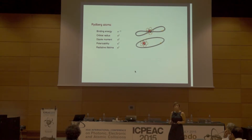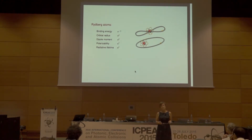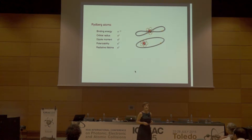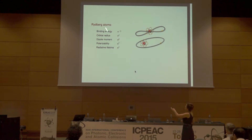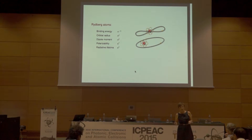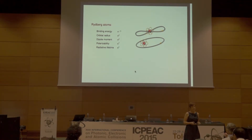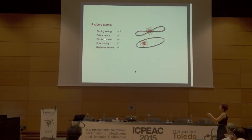Most of you know what a Rydberg system is. A Rydberg atom is an atom in a highly excited state, with n being the principal quantum number. They have very extraordinary properties due to the way the main properties scale with the principal quantum number. They are huge — the radius scales as n squared, so around n equals 30, we are already a thousand times larger than the ground state atom. We have a long radiative lifetime, a strong and very large dipole moment, and large polarizability.